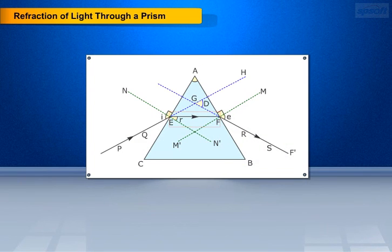Draw perpendicular to the refracting surfaces AB and DC of the prism at points E and F respectively. Mark the angle of incidence, that is angle i, the angle of refraction, that is angle r, and the angle of emergence, that is angle e.